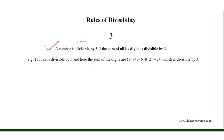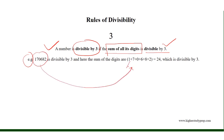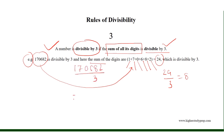A number is divisible by 3 if the sum of all its digits is divisible by 3. For example, in this number, the digits are 1, 7, 0, 6, 8, and 2, and the sum equals 24, which is divisible by 3 because 24 divided by 3 is equal to 8. Therefore, the number itself is divisible by 3 and the division results in 56894.